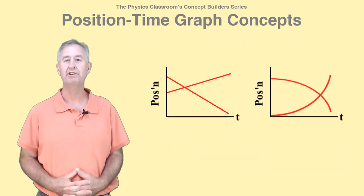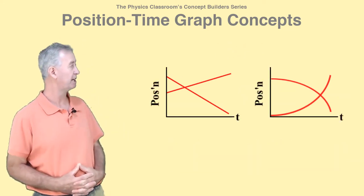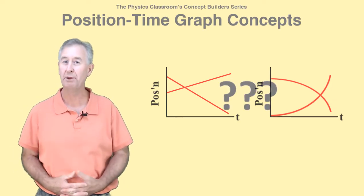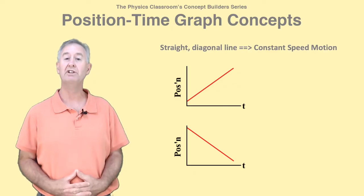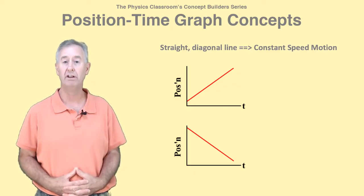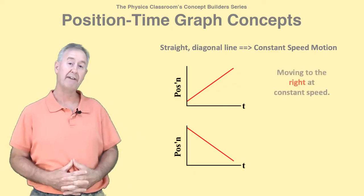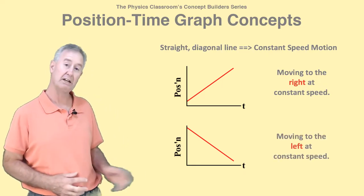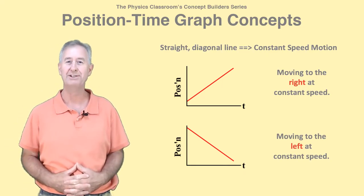You have likely noticed that some PT graphs have straight diagonal lines, while others have curved lines. What's up with that? Well, a straight diagonal line indicates an object moving with a constant velocity. This PT graph is moving to the right with a constant velocity, while this PT graph is moving to the left with a constant velocity.